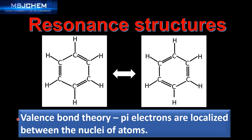One of the problems with the valence bond theory is that the carbon to carbon bonds in the benzene molecule are actually equal length and equal strength. So the benzene molecule does not feature alternating carbon to carbon single and carbon to carbon double bonds. We're going to look at another bonding theory that more accurately describes the bonding in benzene.